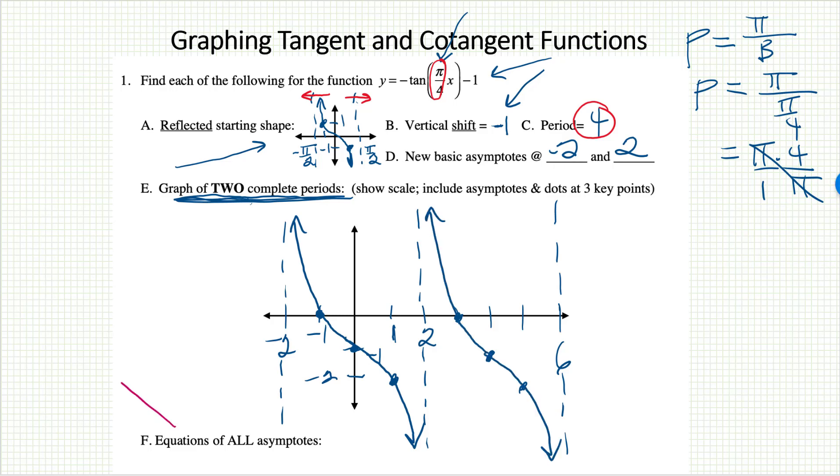As far as the asymptotes, we've done this several times now. They are vertical lines. The simplest one looks to be at positive 2, and then we add multiples of the distance between, which of course is 4. The simplest way to write this would be 2 plus 4k.